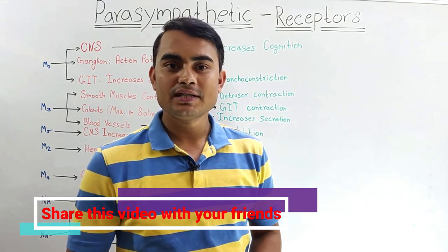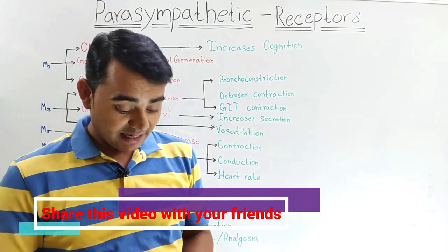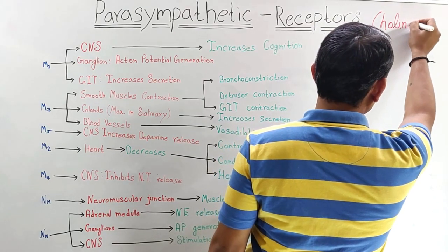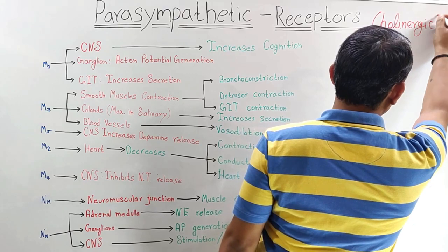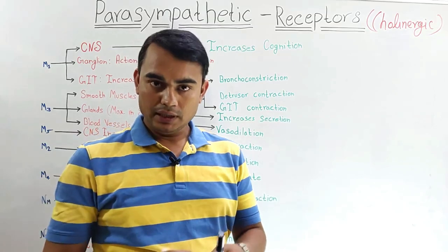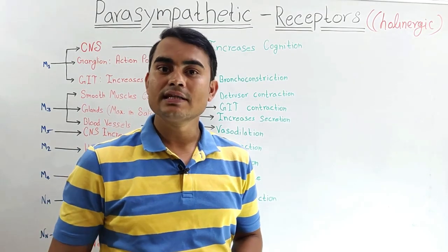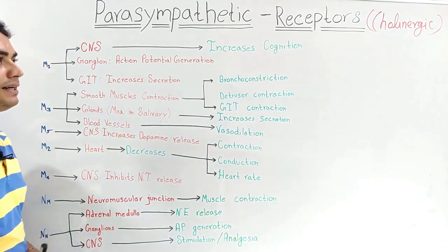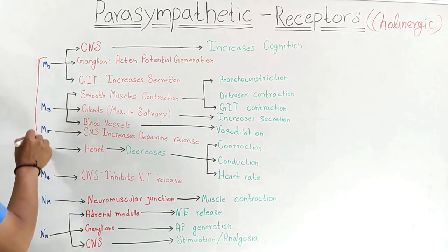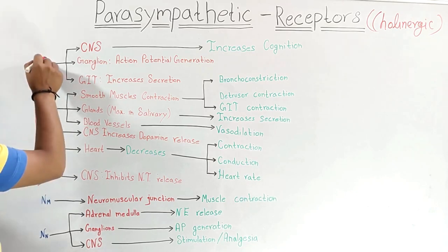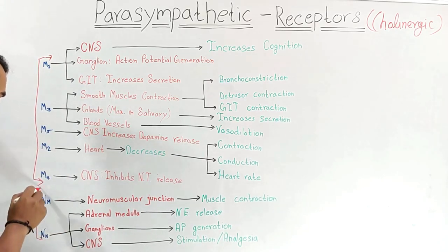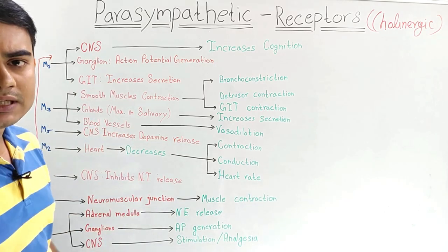Today we are going to discuss the parasympathetic receptor, also called the cholinergic receptor. These receptors are under acetylcholine — the main agonist here is acetylcholine. Under this parasympathetic receptor, we mainly have two types: the muscarinic receptor and the nicotinic receptor.